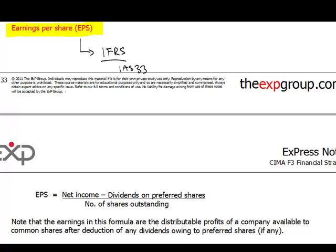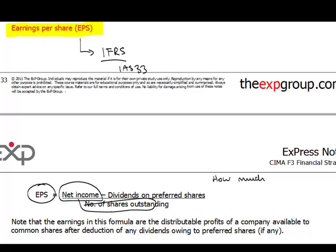For F3, all you need to know is that earnings per share is net income divided by the number of shares. Net income should be taken net of preferred dividends, because that is the income which is distributable to ordinary shareholders of a company. This ratio tells us how much the company earned per share, and in theory that would be the maximum amount of dividends that can be paid. It also enables comparisons between periods, showing the efficiency with which the company makes money regardless of changes in capital structure.